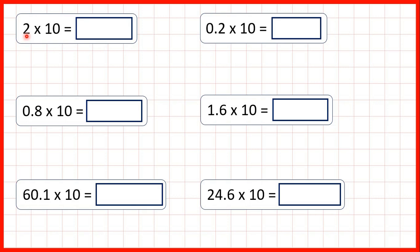So let's do 2 times 10, but let's use the method that we're going to use to multiply decimals. We can write out our number, and because 2 is a whole number we can put our decimal point on the end. We copy down the decimal point, and we're multiplying, which means our number is going to get larger, because if you multiply by any number larger than 1 your answer always gets bigger. In 10 we have 1, 0, so we're going to move the digits 1 square to the left.